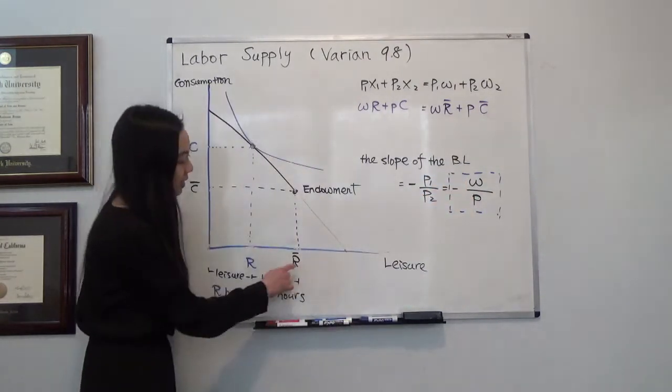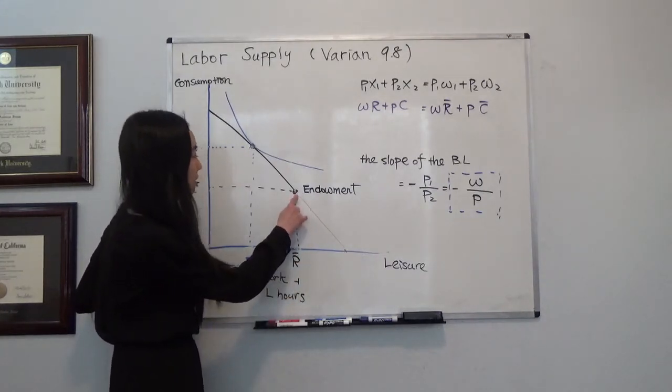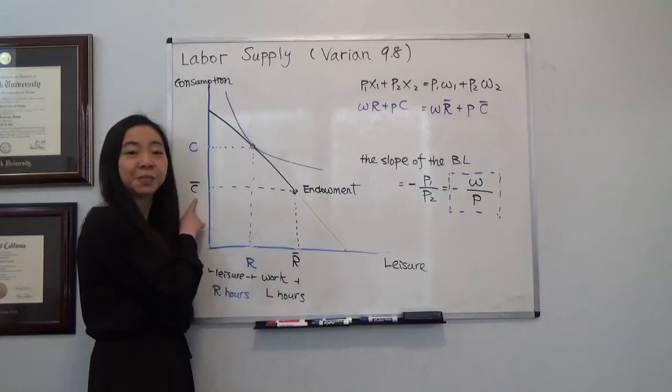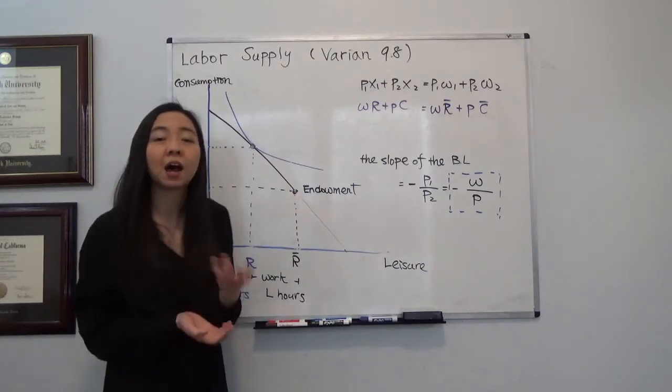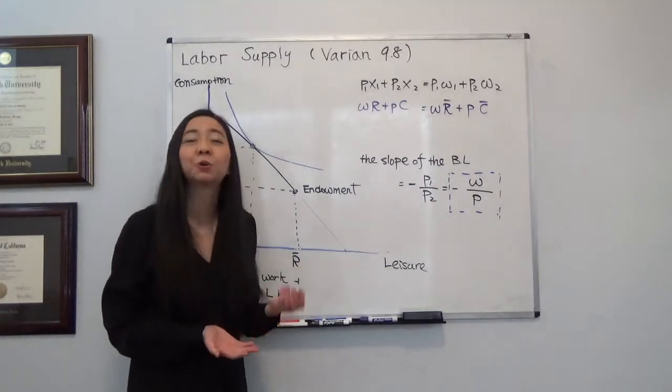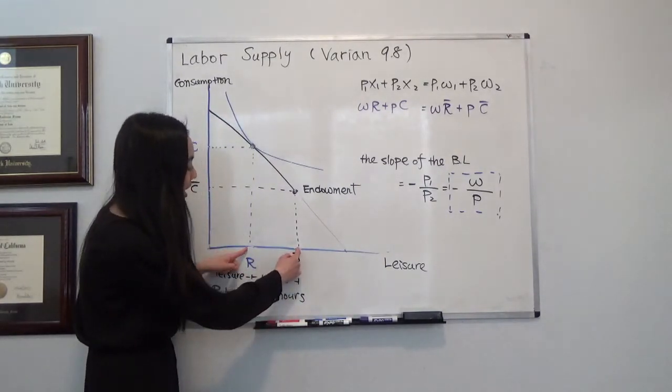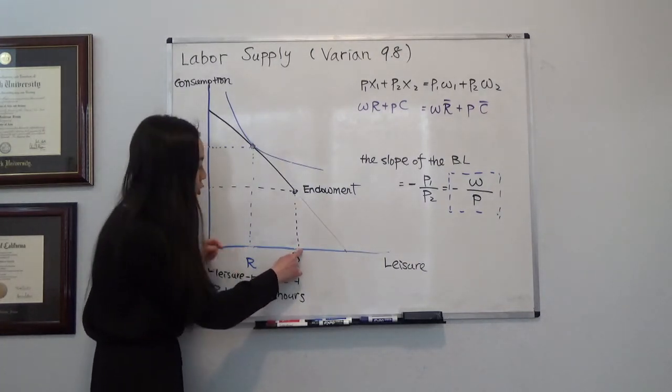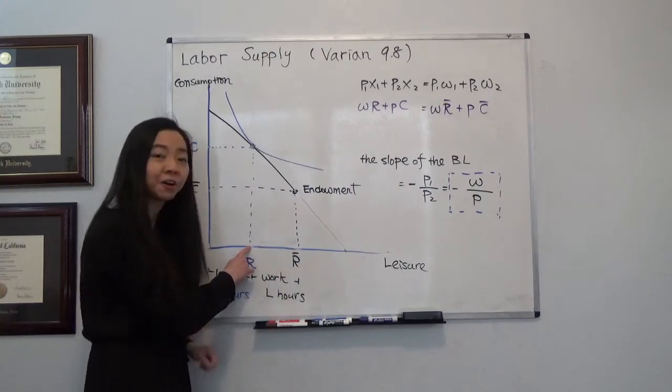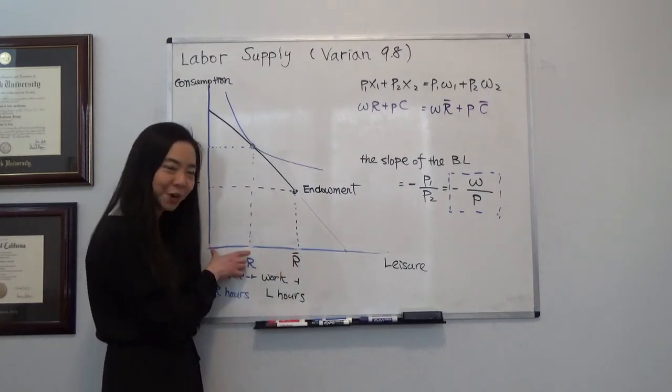So my initial endowment is r̄ hours, let's say 16 hours. And my initial consumption without work will be c̄. So that's my endowment. Now typically, I will go out and sell a few hours in order to get more consumption. So what I will do is that I will reduce my leisure hours. So leisure hour instead of r̄ is going to be reduced to r.